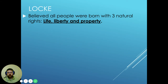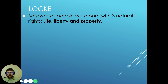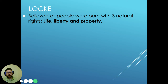Locke believed that all people were born with three natural rights: the rights of life, liberty, and property. You can notice this sounds very familiar to Thomas Jefferson's line in the Declaration of Independence regarding life, liberty, and the pursuit of happiness. We'll talk about the difference between 'property' and 'pursuit of happiness' in greater detail later — pursuit of happiness is a bit more expanded.